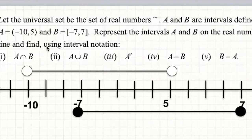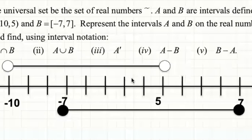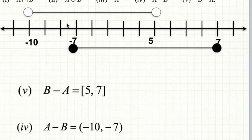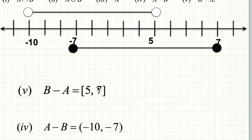For B minus A, we want B only. The region is (5, 7] — B is not using 5 so we have a square bracket... actually open at 5, and a square bracket at 7. For A minus B, this is A only. The region is (−10, −7) — open at negative 10 and open at negative 7. Thanks for watching! Don't forget to like the video and subscribe to my channel. Have a great day!